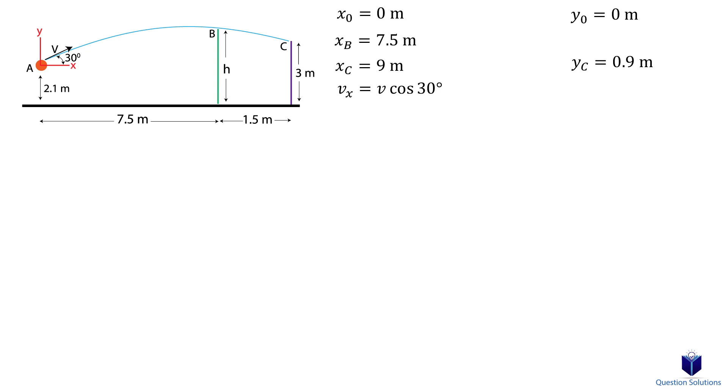That means that at location C, we have the difference of height, 3 meters minus 2.1 meters. The height of the ball as it passes player B is h minus 2.1 meters. The velocity in the vertical direction is v sin 30 degrees.